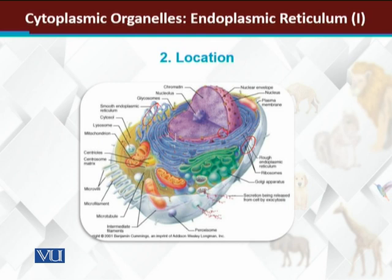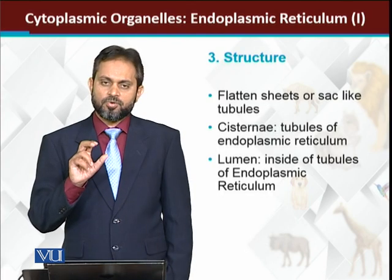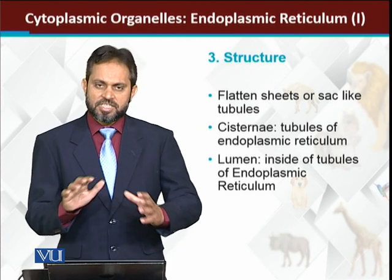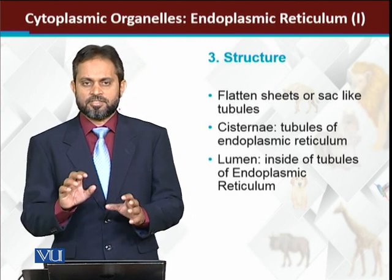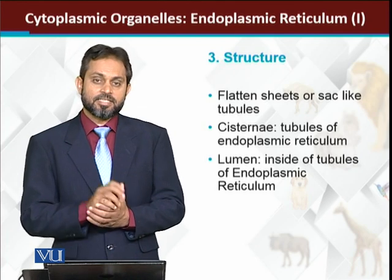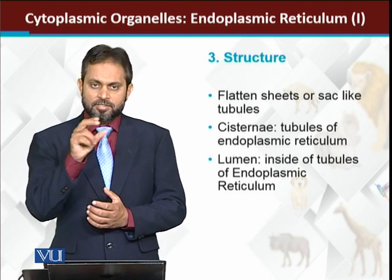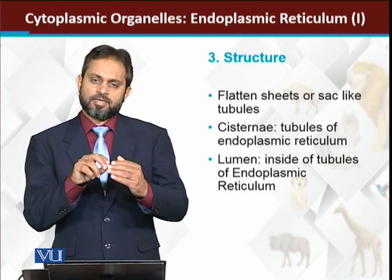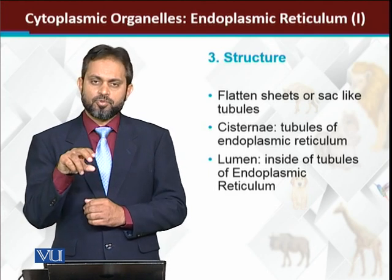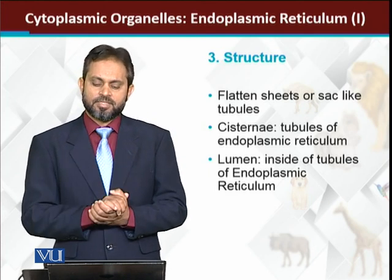This is a sheet-like structure. We have discussed that some endoplasmic reticulum is a sheet-like structure and some of the structures are sac-like or irregular structures. Endoplasmic reticulum has different sheet-like and sac-like structures which are basically different tubular networks.